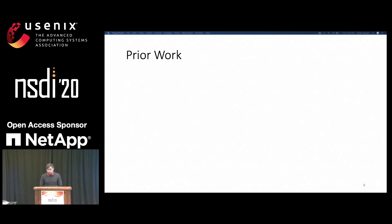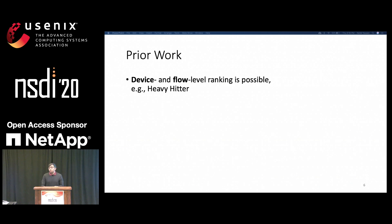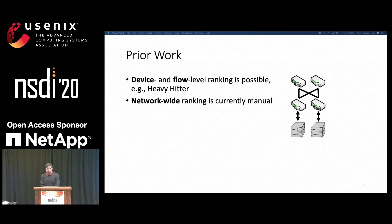There are a set of existing tools that can capture and rank utilization of individual devices and flows. One example is heavy-hitter analysis, which can extract the most common flows in the network. Unfortunately, these miss the relationships between the devices or flows that you need to identify—for example, all-to-all or straggler patterns—which are fundamentally defined by coordinated start and stop times of the flows. Today, these types of network-wide analyses are typically manual and specialized.